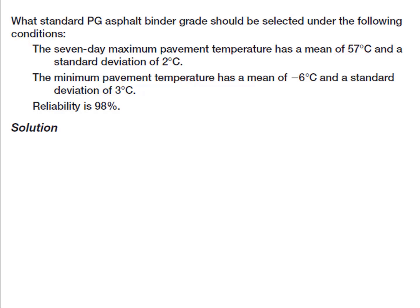Since the reliability is 98 percent, we subtract two standard deviations from the minimum temperature and add two standard deviations to the maximum temperature. The minimum temperature is negative 6 minus 2 times 3, which equals negative 12 degrees Celsius. The maximum temperature is 57 plus 2 times 2, which equals 61 degrees Celsius. So theoretically we need a binder ranging from 61 to negative 12 degrees Celsius.